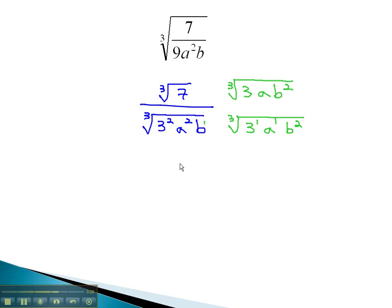When we do this, the numerator is the cube root of 7 times 3, or 21, a, b squared. And the denominator has 3 cubed, dividing the exponent by 3, gives us 1 coming out. a cubed, dividing the exponent by 3, gives us 1 coming out.